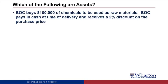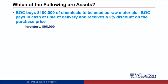BOC buys $100,000 of chemicals to be used as raw materials. BOC pays in cash at the time of delivery and receives a 2% discount on the purchase price. This is an asset, and we'll call this asset inventory — a term we use for any product or raw materials that we buy to turn into a finished product to sell at a markup. It meets both criteria. The value here is $98,000, not $100,000, because we value it at what we actually paid for it.